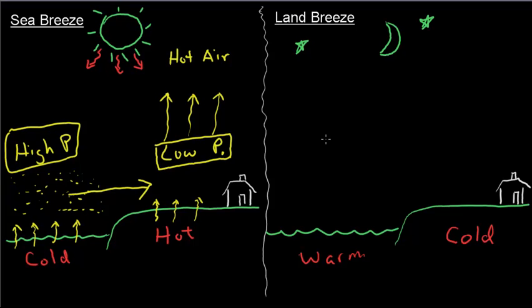The opposite would be true with land breeze. It's the same process, high pressure going to the low but we're going in a different direction here. So because the water is still warm from the entire day of being heated by the sun, here it will make the air above it warm.